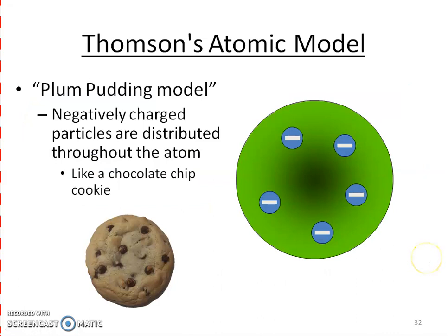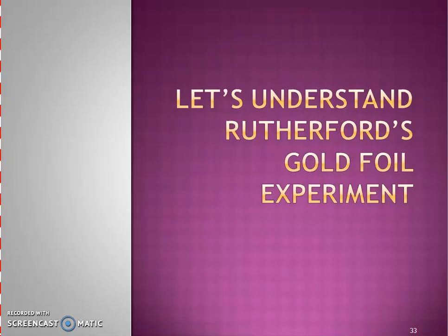So we call this the Thomson atomic model where you have an atom and you have all these negative charges around it. I like to think of a chocolate chip cookie. So if we have this chocolate chip cookie, we have the dough and then we have the chocolate chips inside. So the Thomson model said, okay, we have the atom and it's all filled with these electrons. So that was kind of the beginning of finding these subatomic particles.